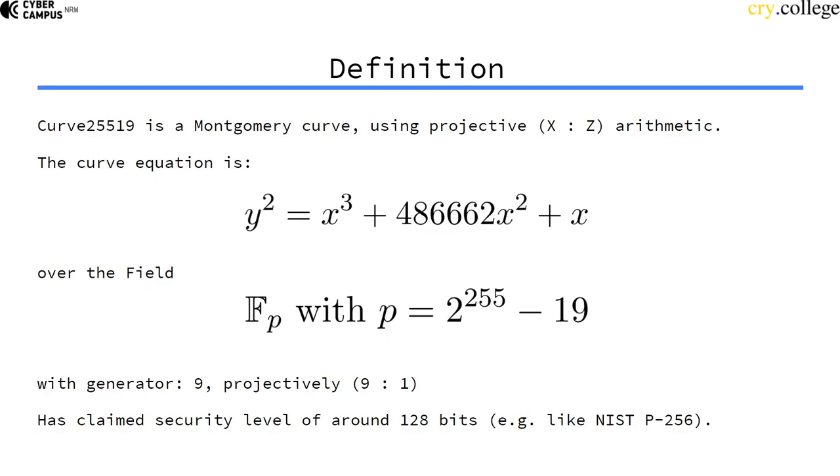The generator that is used for this system is 9. So the x-coordinate is 9 and as we have learned we just don't use the y-coordinate in this case. So projectively the generator is x-value 9 and z-value 1 if we have it in the plane.